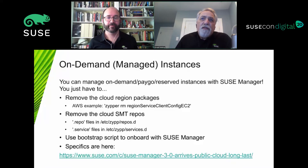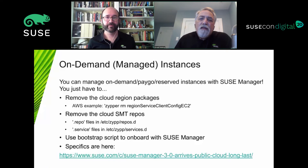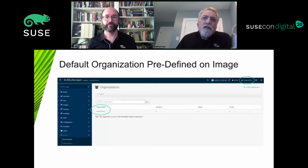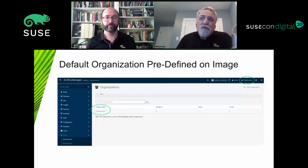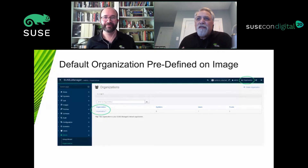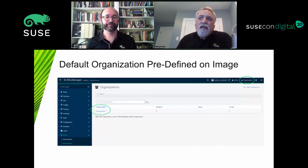Regardless of where you are using on-demand instances, to be managed in SUSE Manager you have to remove the repositories that already exist on the box and connect to SUSE Manager. There are very specific instructions in the documentation. Another thing common across all clouds: the default organization is already predefined on the distributed image. When you start your SUSE Manager box, there's already an admin user and an organization called 'Organisation' — spelled with an S for EMEA — which you'll need to rename.